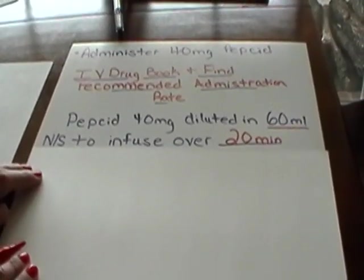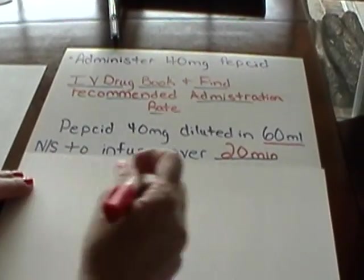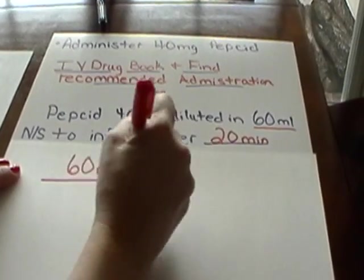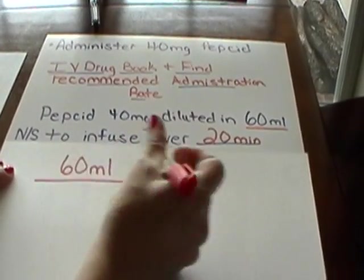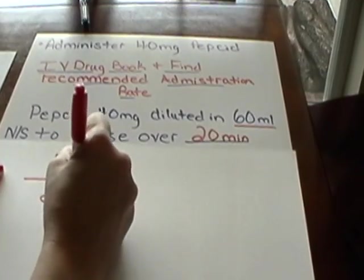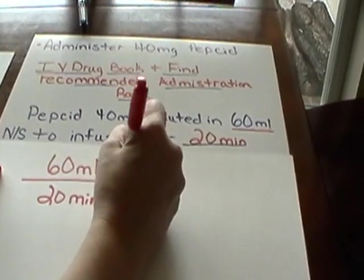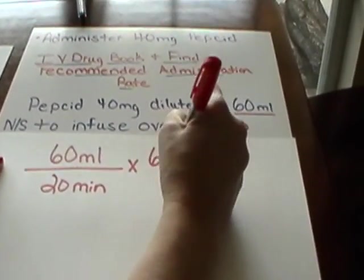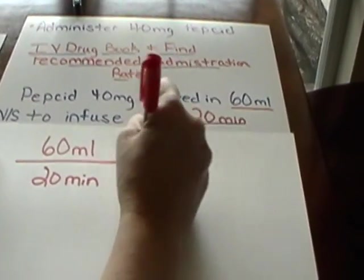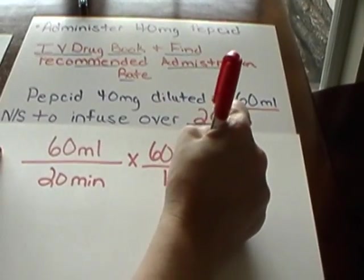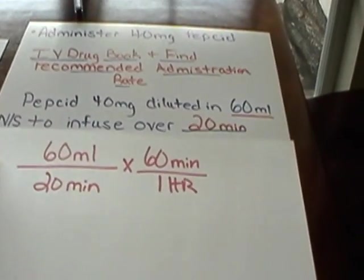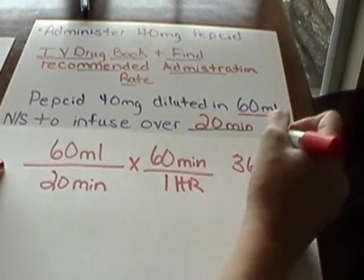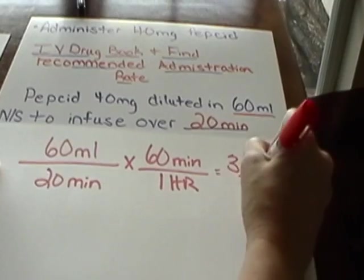Now we're going to work our problem. We take our volume, which is 60 milliliters, as our numerator over our amount of time, which is 20 minutes. In this problem we have to put in our extra step: there are 60 minutes in every one hour. That gives us 3600 over 20.